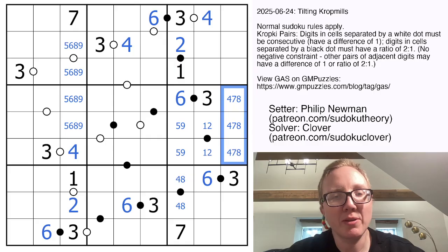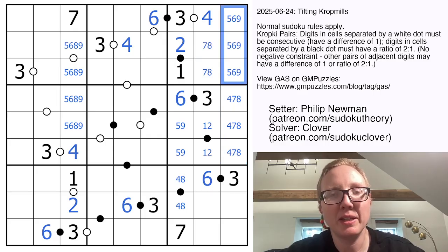That makes these three digits 4, 7, and 8, making this a 7, 8 pair. Therefore, to finish the region, we need 5, 6, and 9 here.